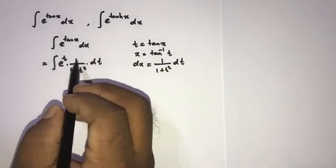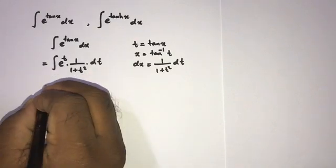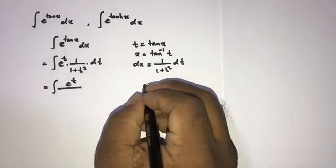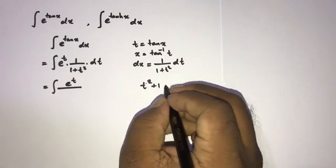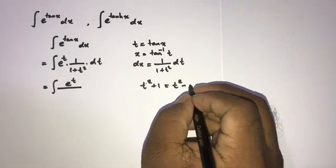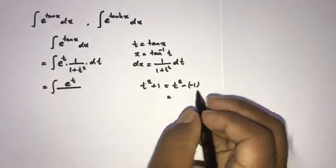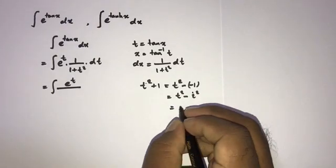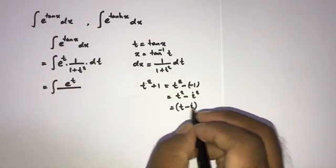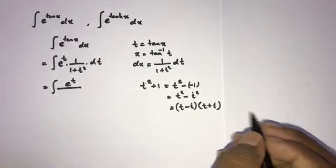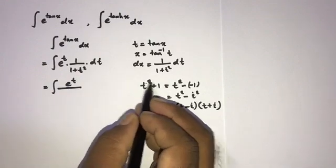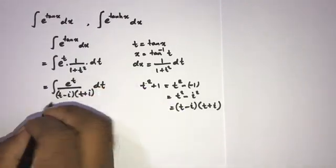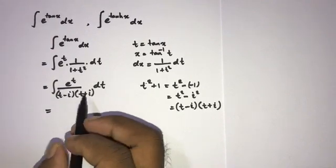Now we have e to the t over (1 plus t squared). We know 1 plus t squared equals t squared plus 1, and we can use complex numbers to factor this. So t squared plus 1 equals (t minus i) times (t plus i). So 1 plus t squared equals (t minus i)(t plus i) dt.